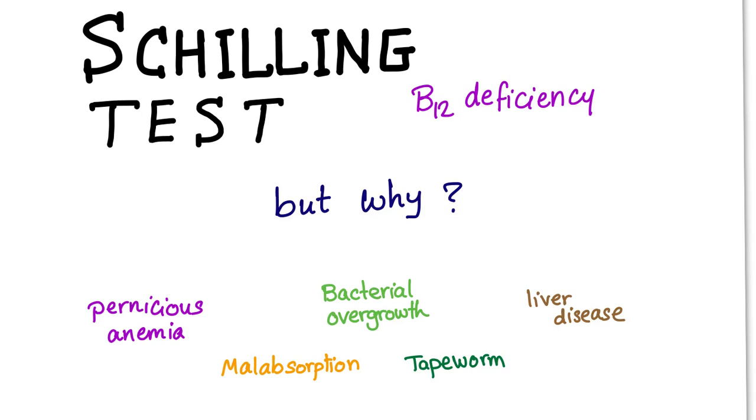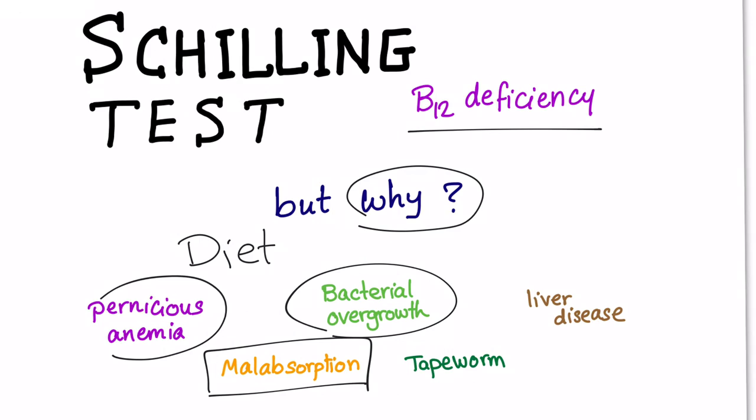So here comes our hero, the Schilling test. We know that it's probably B12 deficiency, but why? Is it pernicious anemia? Is it diet? Is it bacterial overgrowth? Is it malabsorption syndrome?